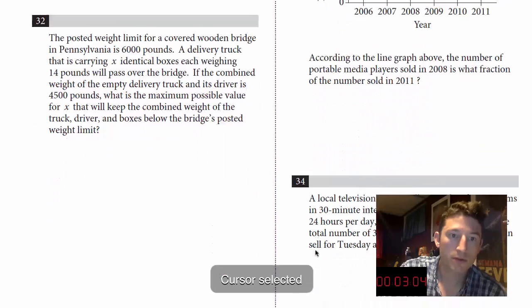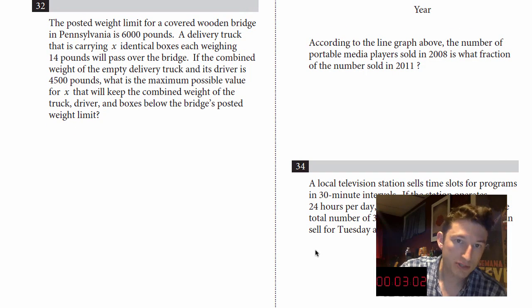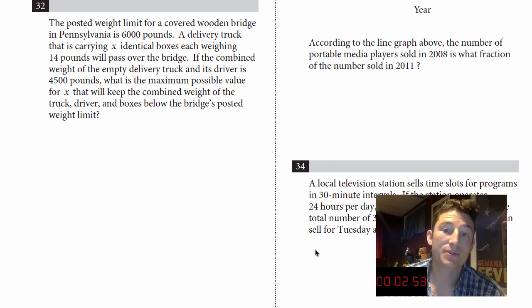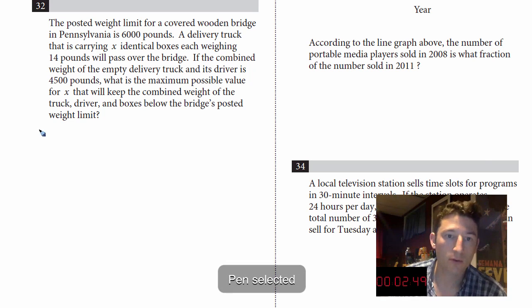Okay, number 32. The posted weight limit for a covered wooden bridge in Pennsylvania is 6,000 pounds. A delivery truck that is carrying X identical boxes, each weighing 14 pounds, will pass over the bridge. So I'm just going to write that down real quick. So each box, each box, 14 pounds.